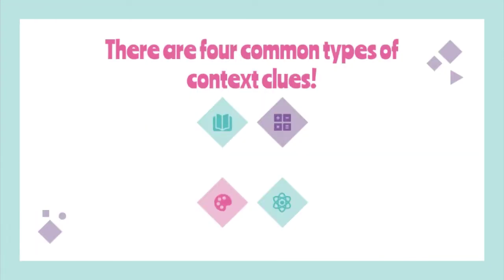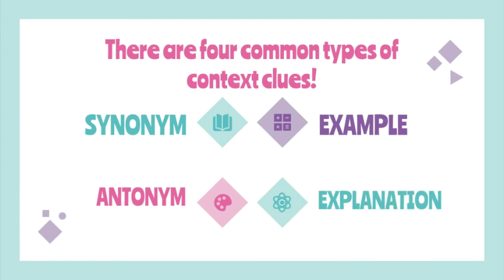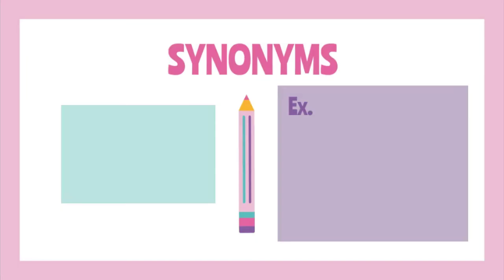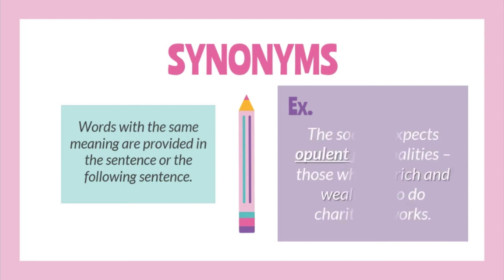So there are four common types of context clues: synonym, antonym, example, and explanation. Let us start with synonym. Words with the same meaning are provided in the sentence or in the following sentence. For example, 'The society expects opulent personalities — those who are rich and wealthy — to do charitable works.' The unfamiliar word is opulent. In this sentence, the words rich and wealthy are synonyms of the word opulent.